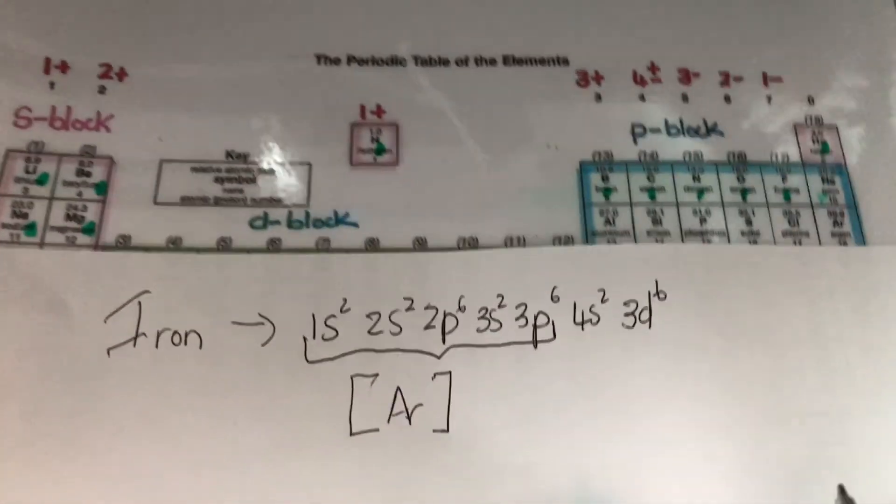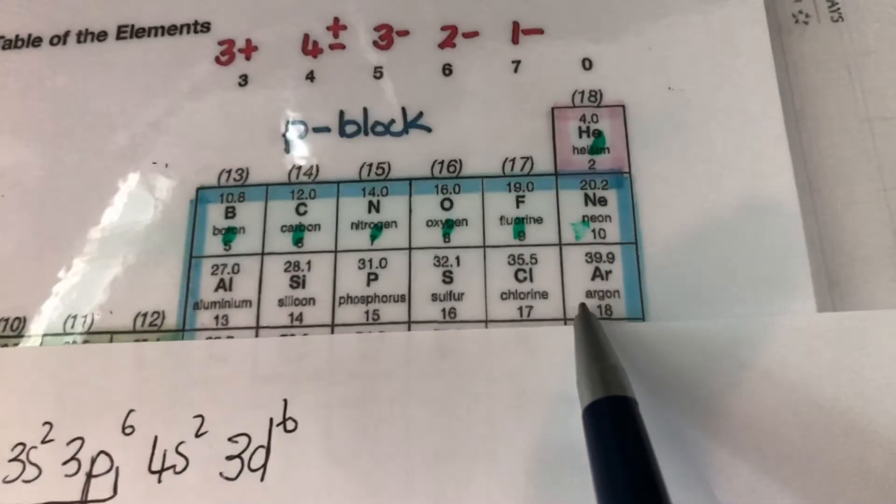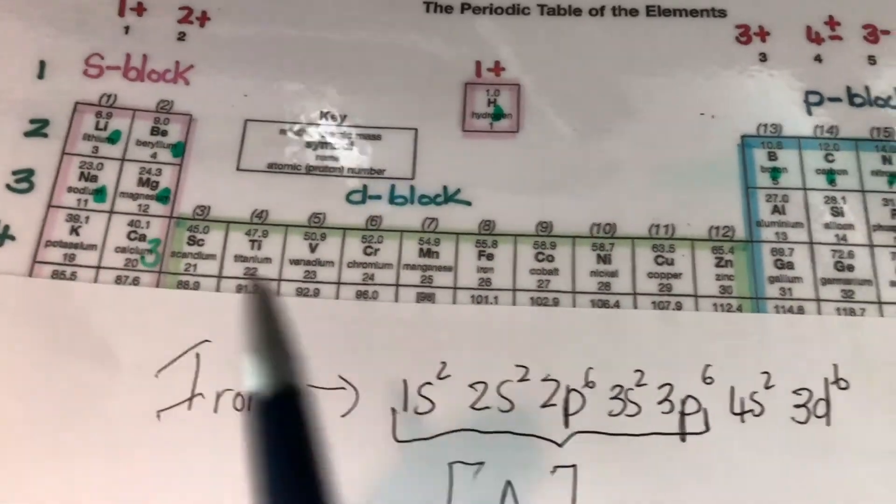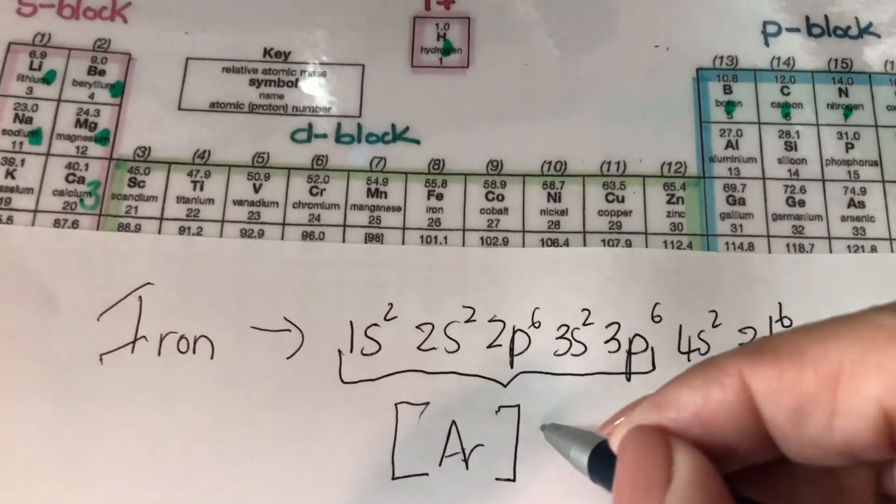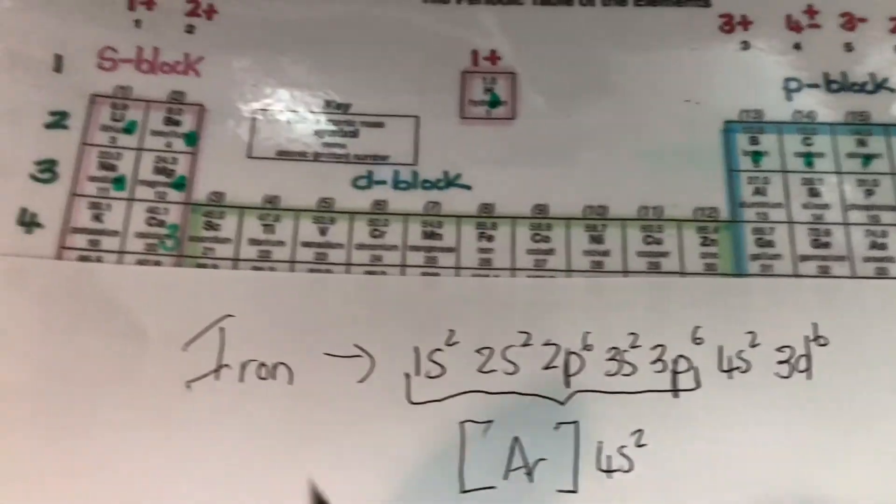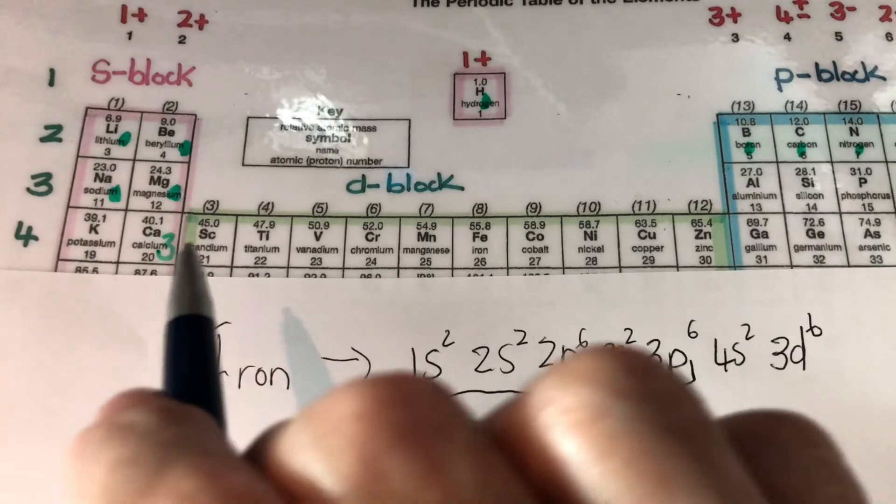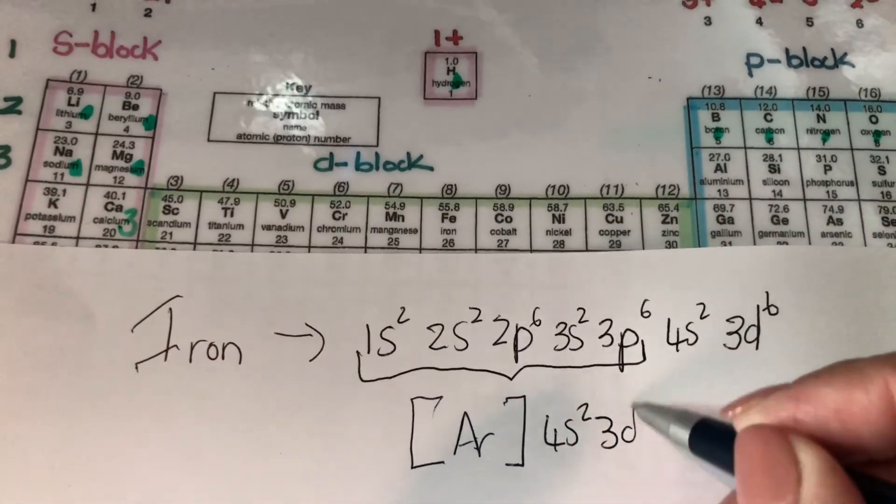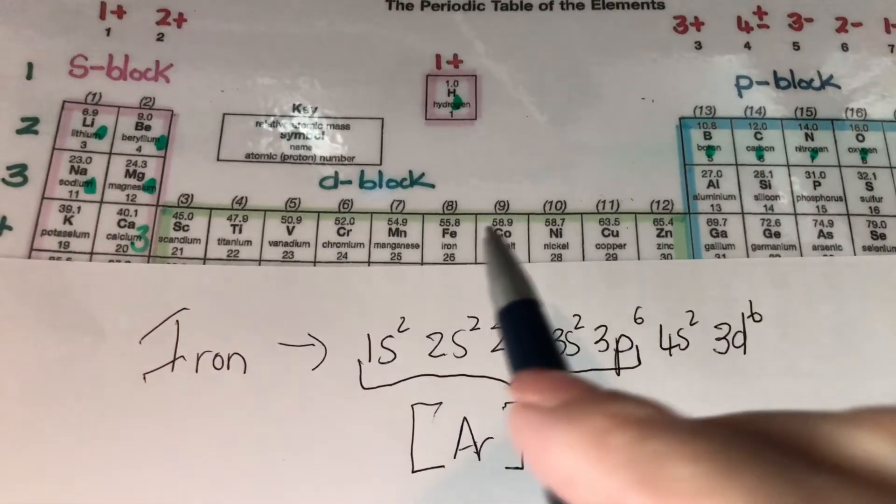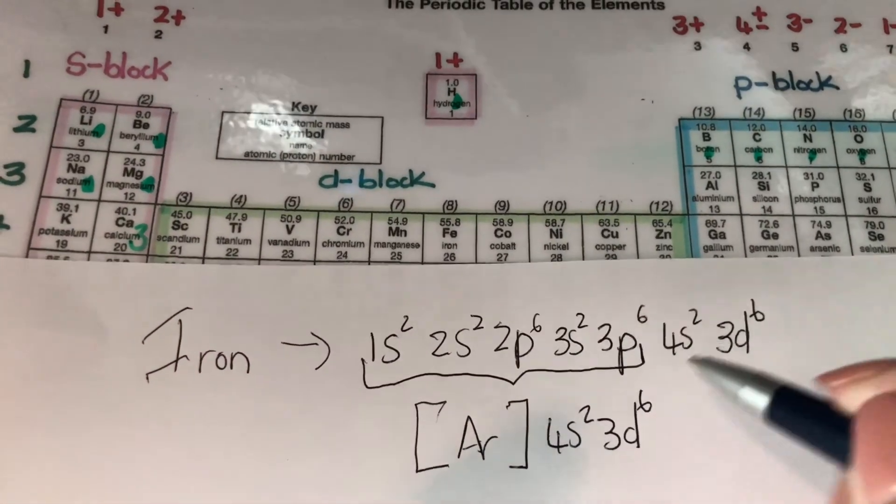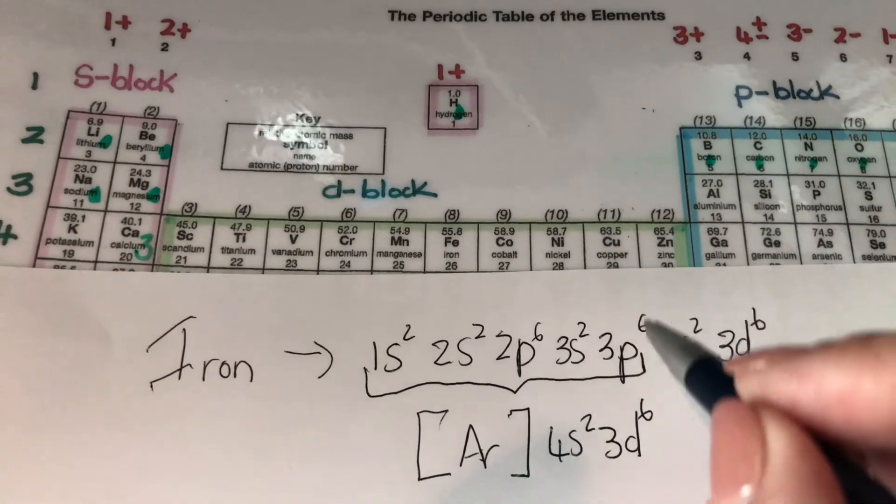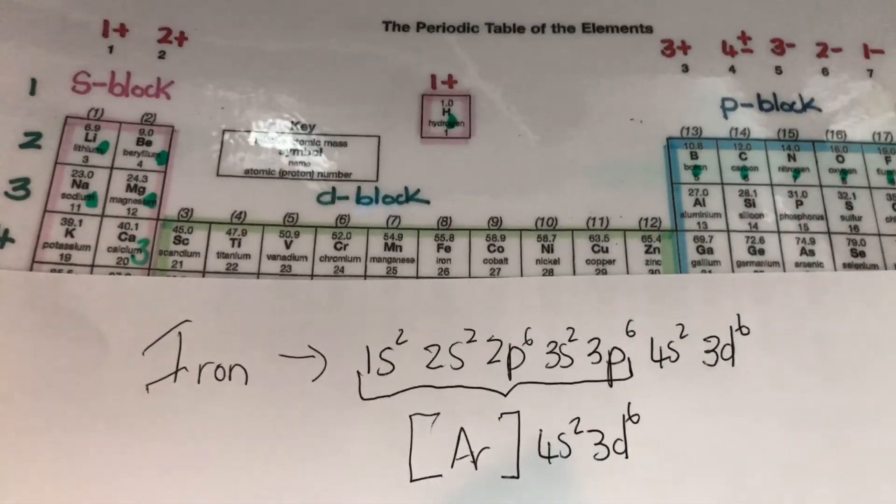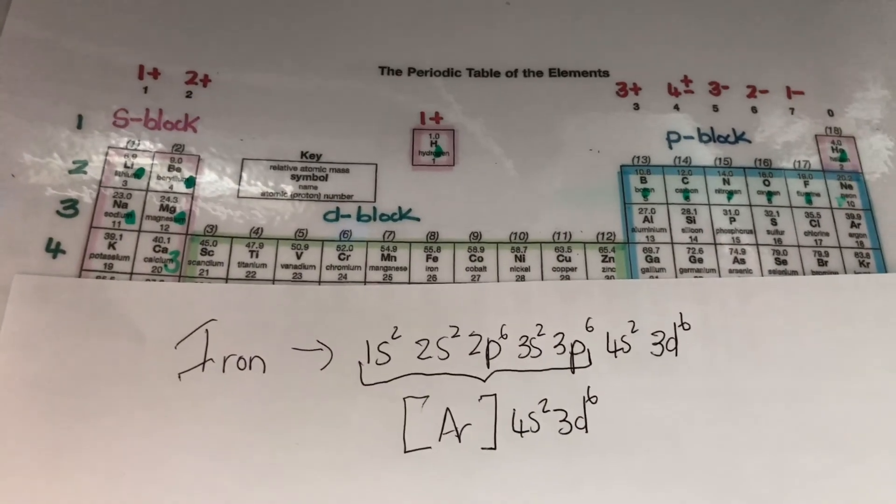And then if I go from argon, I will have to have 4S2, 4S2 and then 3, remember this becomes a 3, 3D, 1, 2, 3, 4, 5, 6. So you can see that this portion at the back here is the only part that I then write down because this section here is represented by the noble gas argon.